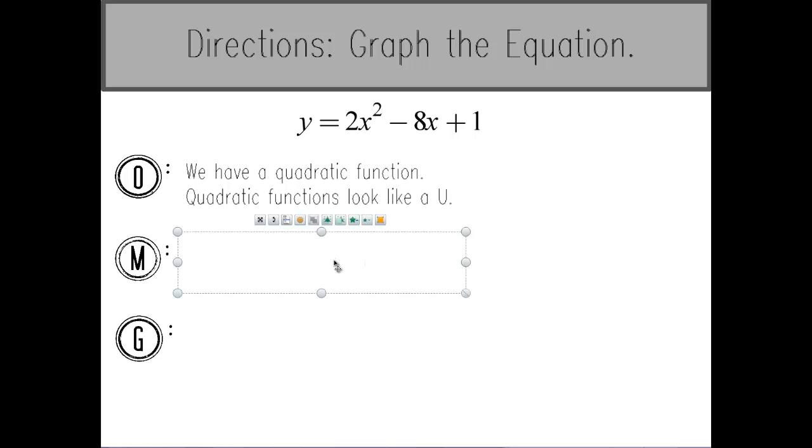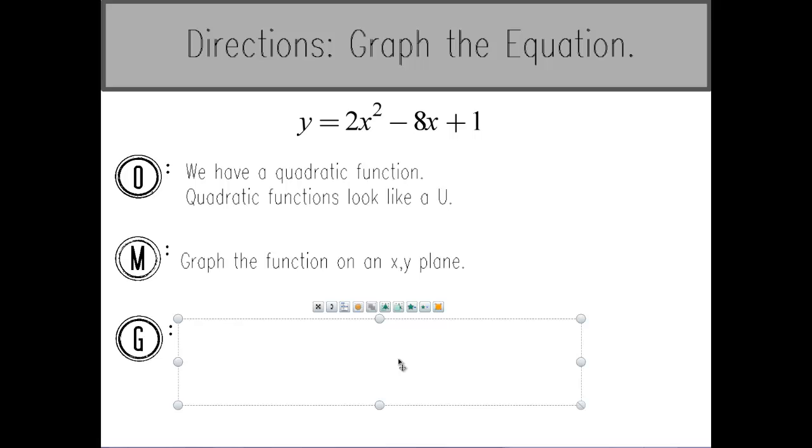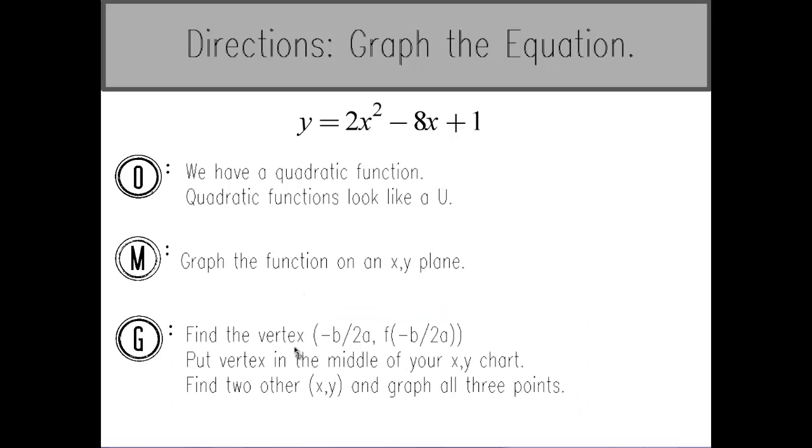So our mission is going to be to take this specific function, graph it on an XY plane and have it look like a U. Our game plan is to first find the vertex. When we're finding the vertex in standard form we use the formula negative B over 2A for our X coordinate, and then to find the Y coordinate we plug negative B over 2A into our function and that gives us our Y value. So we're going to put our vertex in the middle of our XY chart and then we're going to find two other XY coordinates and plot all three of those points.